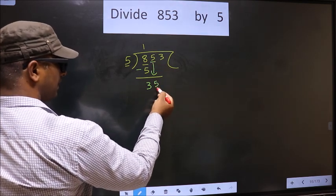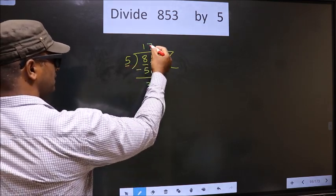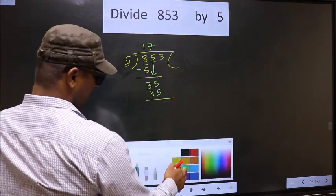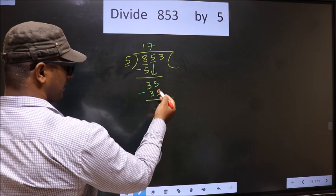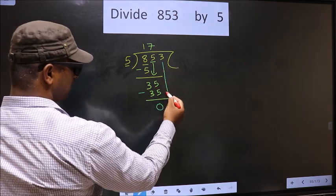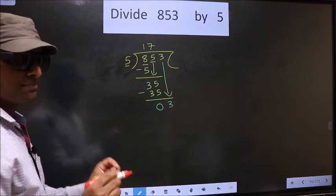Now here we have 35. Here 5, when do we get 35 in the 5 table? 5 sevens are 35. Now you subtract: 35 minus 35 is 0. Now you bring down the beside number, that is 3, down. This is where the mistake happens.